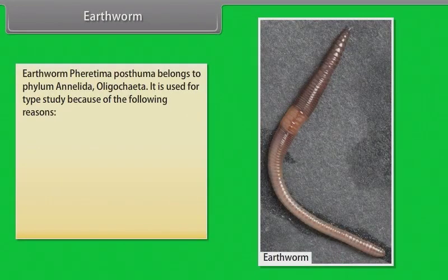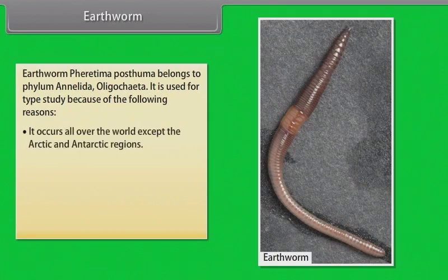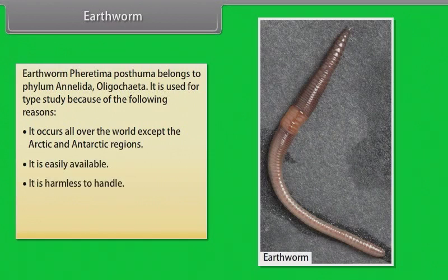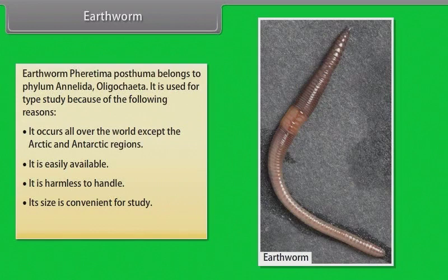Earthworm. Earthworm Ferratima posthuma belongs to phylum Annelida, Oligochaeta. It is used for type study because of the following reasons: it occurs all over the world except the Arctic and Antarctic regions, it is easily available, it is harmless to handle, its size is convenient for study, and its morphology is well studied.